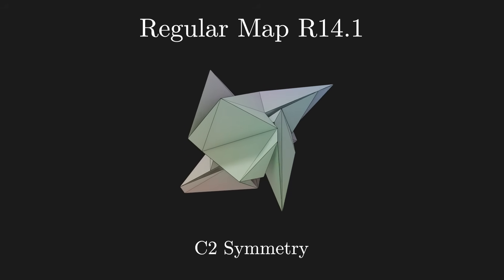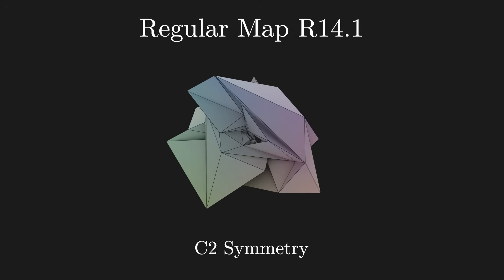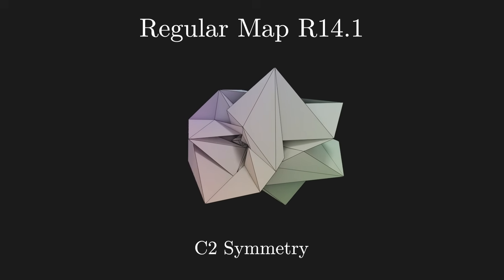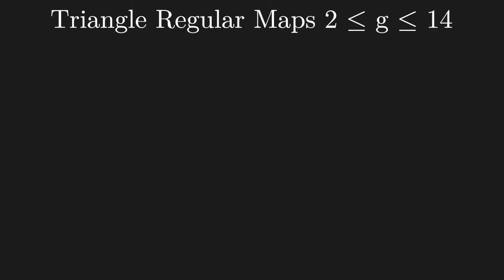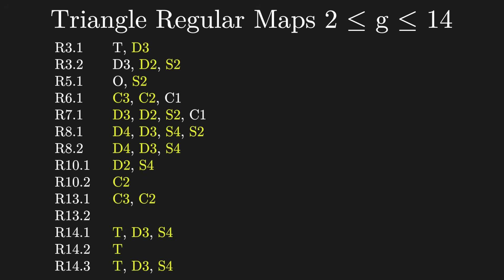So now I'm thinking, I bet I could find a lot more of these. But to not spend forever on this problem and actually get the paper published, I decided to focus on the hyperbolic regular triangle maps up to genus 14. And there's 14 of those. Some of these already had known embeddings and symmetries, but here's all the new ones that I found.